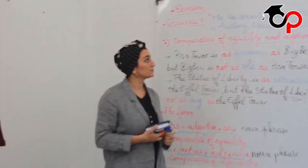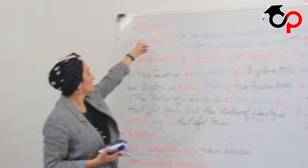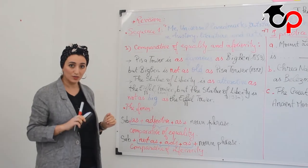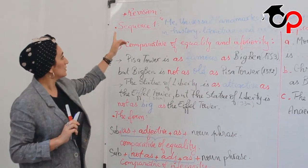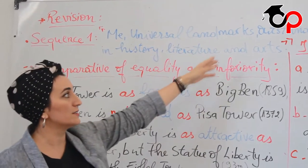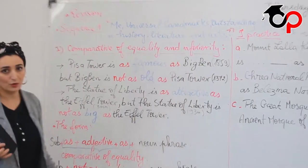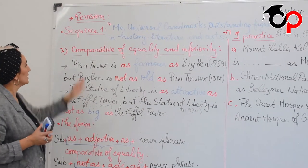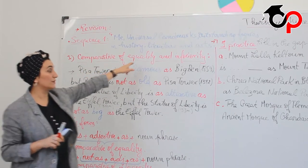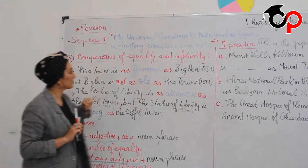Good morning, students. Our today's lesson is going to be about a revision. We have to start the revisions from today. The sequence one is about universal landmarks and outstanding figures in history, literature and arts, as you already know. So today we are going to see the comparative of equality and inferiority.